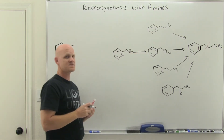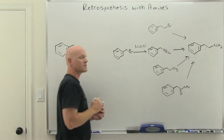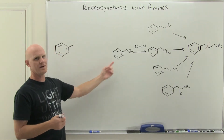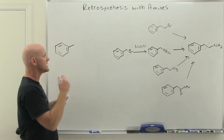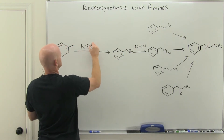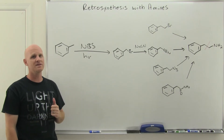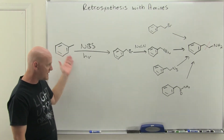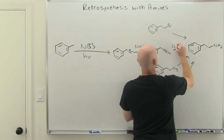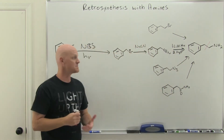In an SN2 reaction you need a good leaving group — I always recommend bromine in synthesis because you know how to install it in many ways. Simply add sodium cyanide in a polar aprotic solvent like DMSO or acetone. The question then is how to get the bromine there: it's just benzylic bromination, so we use NBS with light, heat, or peroxide. Then LAH followed by H3O+ gives the amine. It's just a three-step synthesis.